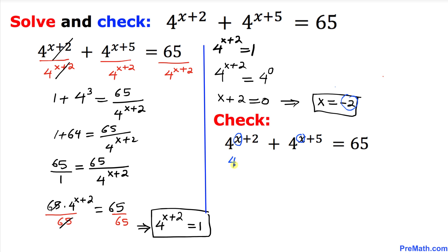That's going to give us 4^(-2+2) + 4^(-2+5). Now the question is, is this left-hand side equal to 65? We can see this is simply 0, so 4^0 + 4^3. Is this equal to 65?